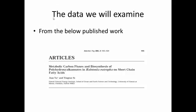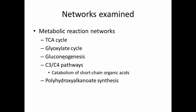So we will be examining data from a published work. Here is this published work here. It's from Biotechnology Progress. It is Metabolic Carbon Fluxes and Biosynthesis of Polyhydroxyalkanoids in Ralstonia eutrophia on Short Chain Fatty Acids by UNC from University of Hawaii. What these authors do is they examine metabolic reaction networks consisting of and not limited to the TCA cycle, glyoxylate cycle, the gluconeogenesis pathway, and C3, C4 short chain organic acid catabolic pathways, and the polyhydroxyalkanoid biosynthesis pathway.